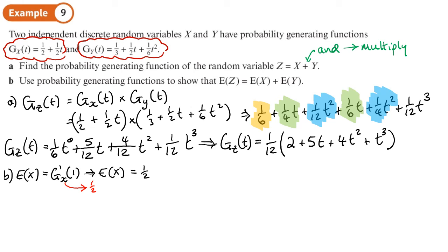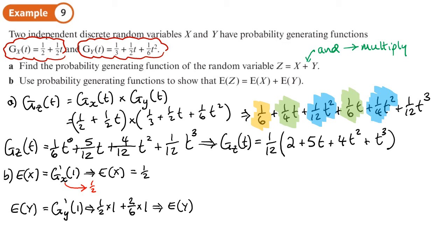Now let's work out the mean of Y. We differentiate the PGF for Y and substitute t = 1. Differentiating gives ½ + 2/6 · t, so substituting t = 1: E(Y) = ½ + 2/6. Now ½ = 3/6, so 3/6 + 2/6 = 5/6. Therefore E(Y) = 5/6.